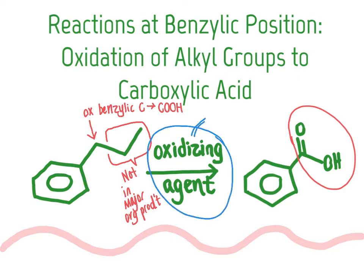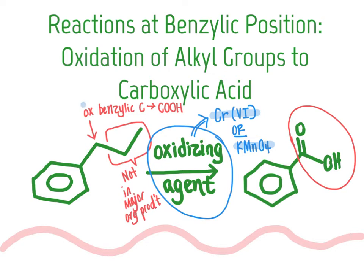One thing we haven't talked about yet is what oxidizing agent to use. Thinking back to oxidation reactions learned in the past — such as oxidizing alcohols — the main oxidizing agents we worked with were chromium-6 reagents, where chromium is in the Cr(VI) state, and potassium permanganate, KMnO4. If you see chromium in the Cr(VI) state or potassium permanganate in the reaction mixture, those are the two most common oxidizing agents to look for, and you're looking for a benzylic carbon that will be converted into a carboxylic acid.